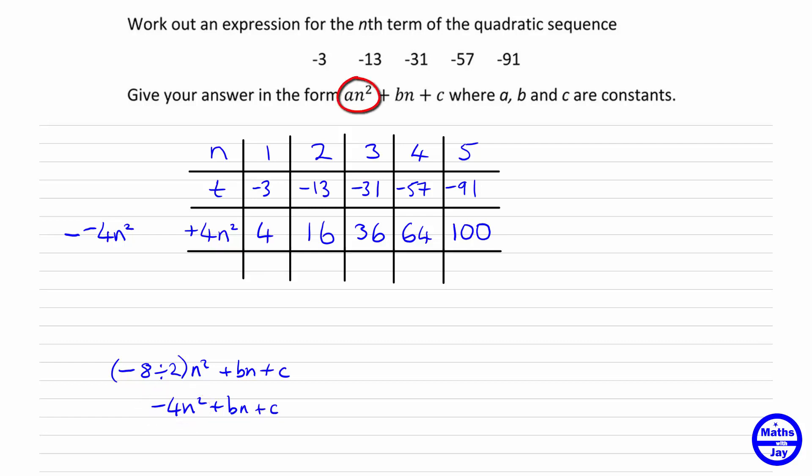So what we're doing is subtracting the an squared term from our an squared plus bn plus c. So we're going to end up with bn plus c when we combine together the original sequence and taking away the negative 4n squared. So we're adding together t and 4n squared. So negative 3 plus 4 is 1. Negative 13 plus 16 is 3. Negative 31 and 36 comes to 5. Negative 57 plus 64 is 7. And negative 91 plus 100 is 9.